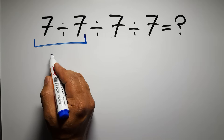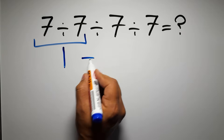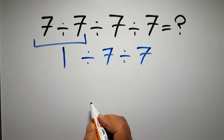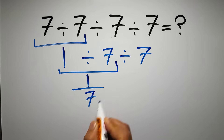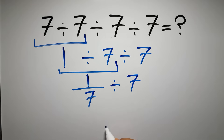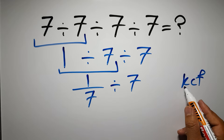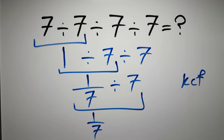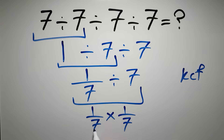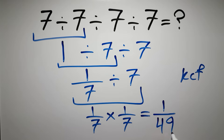So first, this division: 7 divided by 7 is just 1, so we have 1 divided by 7 and again divided by 7. Now we have to work from left to right. 1 divided by 7 can be written as 1 over 7. So 1 over 7 divided by 7 — according to the KCF rule, K stands for Keep, C stands for Change, and F stands for Flip — we keep the first fraction, change division to multiplication, and flip the second fraction. So we have 1 over 7 times 1 over 7, which equals 1 over 49.